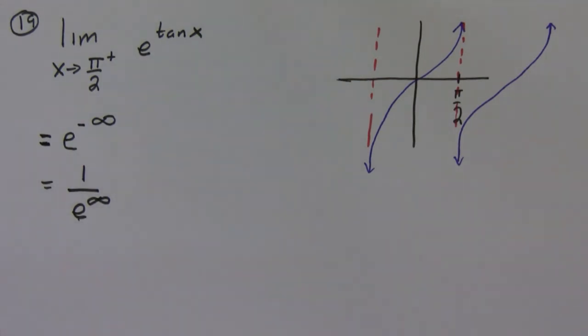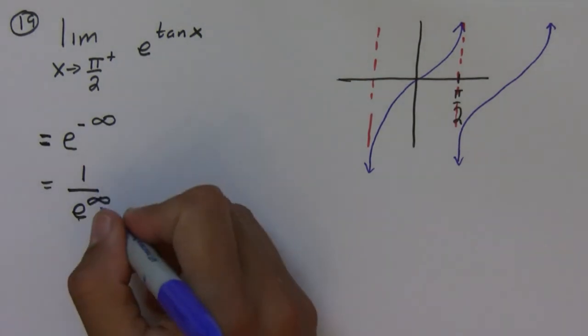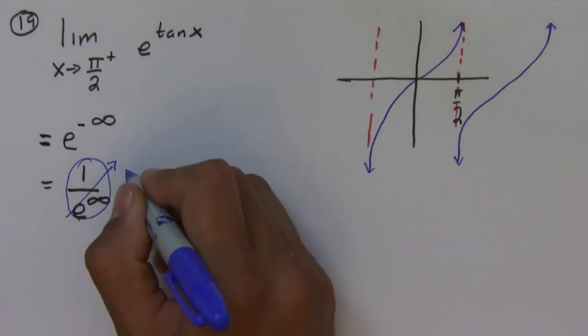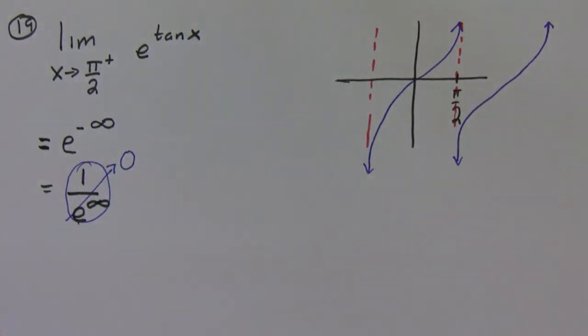And e raised to a very big number is simply a very big number. So the denominator is getting bigger and bigger, and so this guy is going to zero. The answer is zero.